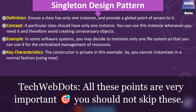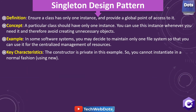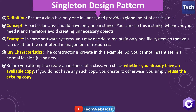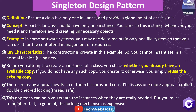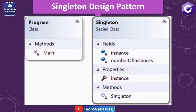There are key characteristics in the Singleton design pattern. The constructor is private, so you cannot instantiate it in a normal fashion using the new keyword. Before you attempt to create an instance, you check whether you already have an instance available. If you do not, you create it; otherwise you simply refuse. There are many approaches, each with their own pros and cons. I will discuss the double-checked locking approach — also called thread-safe — alongside the non-thread-safe approach. This approach helps you create the instance only when really needed, but locking mechanisms are generally expensive.